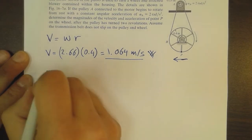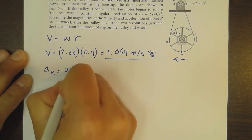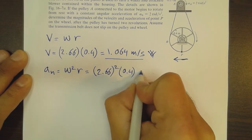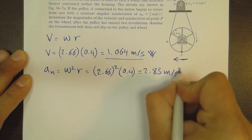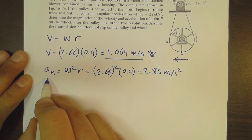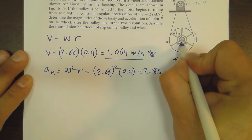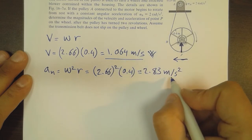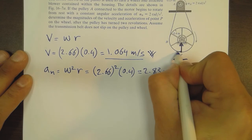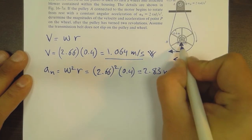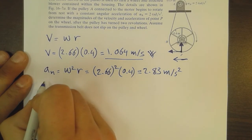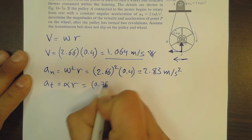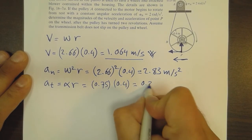In terms of the normal acceleration, this equals omega squared times R, which equals 2.66 squared times 0.4, giving 2.83 meters per second squared. The direction of the normal acceleration points toward the center. Any point on the rim has two acceleration components: the normal part just calculated, and the tangential part. The tangential acceleration equals alpha times R, which equals 0.75 times 0.4, giving 0.3 meters per second squared.